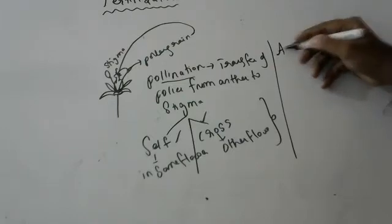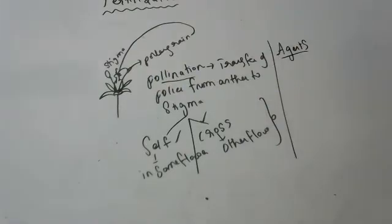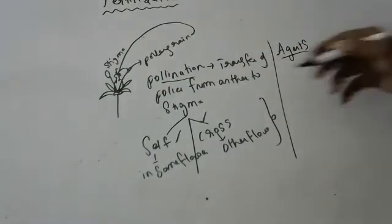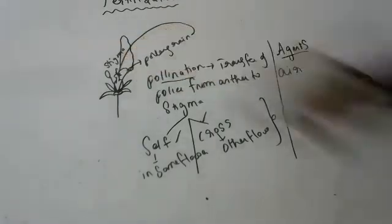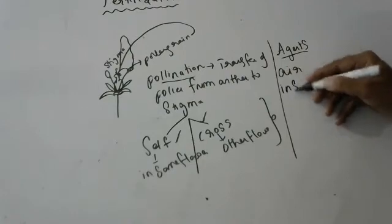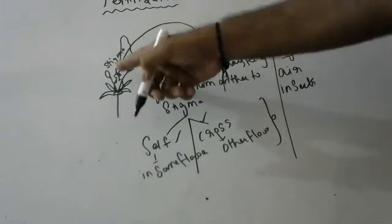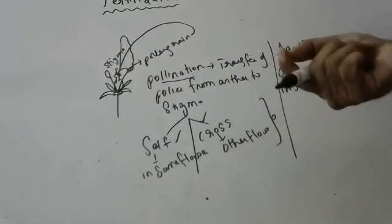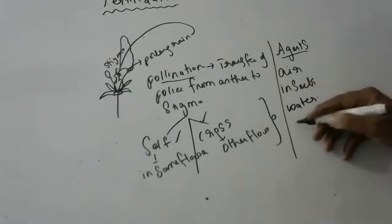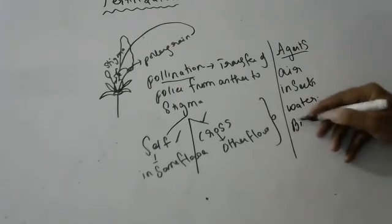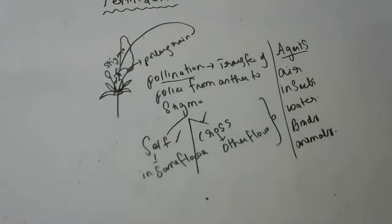For pollination you require agents. Pollen grains don't have legs to move on their own. Some famous agents are air — the pollen will fly in the air — and insects, which are attracted by petals. When an insect sits on the stigma, pollen sticking to its legs gets transferred. Sometimes it may be water, birds, or animals — many different types of pollination agents.